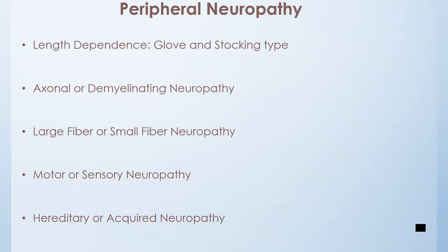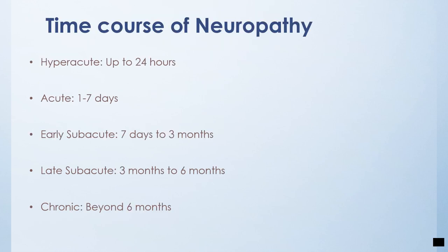Peripheral neuropathies could be considered as length-dependent or non-length-dependent. They can be divided as axonal or demyelinating neuropathies, large fiber or small fiber neuropathies, motor or sensory neuropathy, or hereditary or acquired forms of neuropathy. Time course is very important to determine diagnosis, which could include hyperacute, acute onset, early subacute, late subacute, to chronic forms of neuropathies.